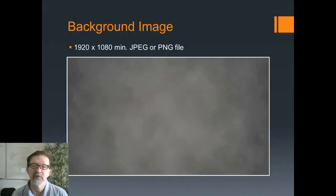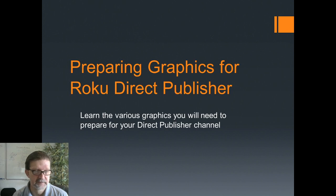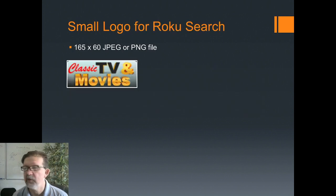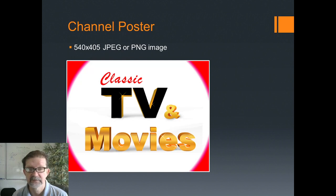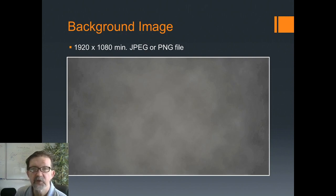Let's go ahead and overview once again the things you're going to need: A) a splash screen, B) your channel logo, C) a small logo for Roku search, D) a poster for your channel, and E) a background image. These are all the items you need to prepare in order to move forward and have all the pieces and parts you need for the channel.